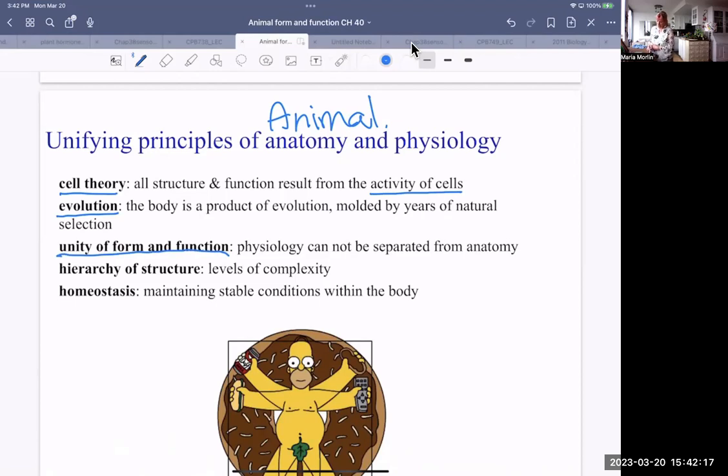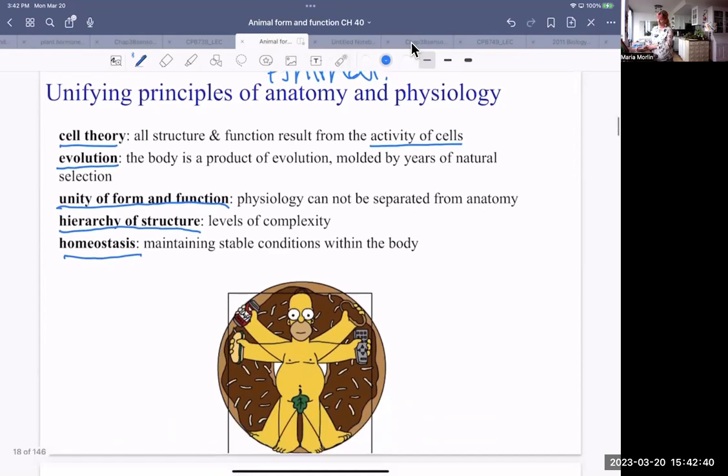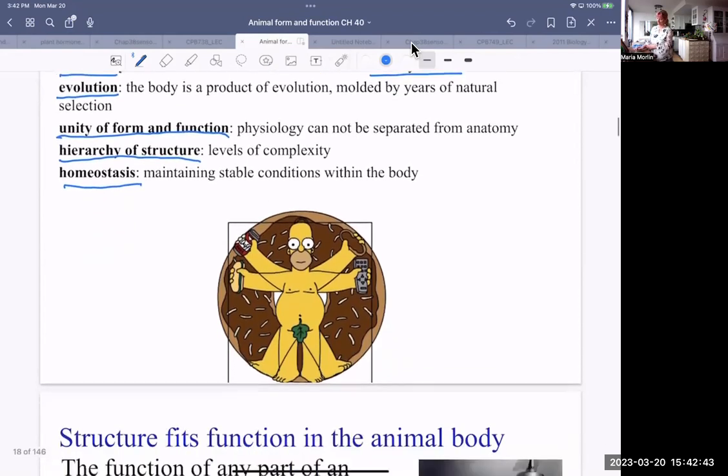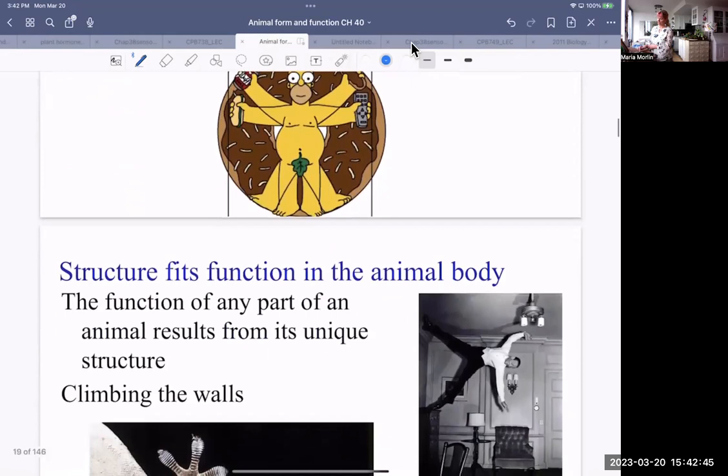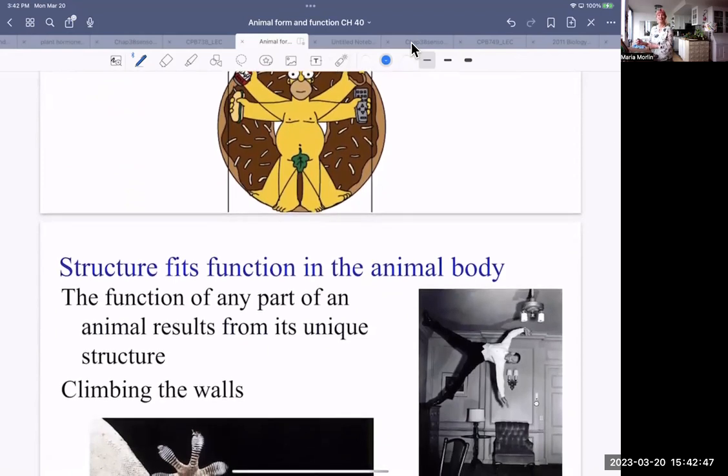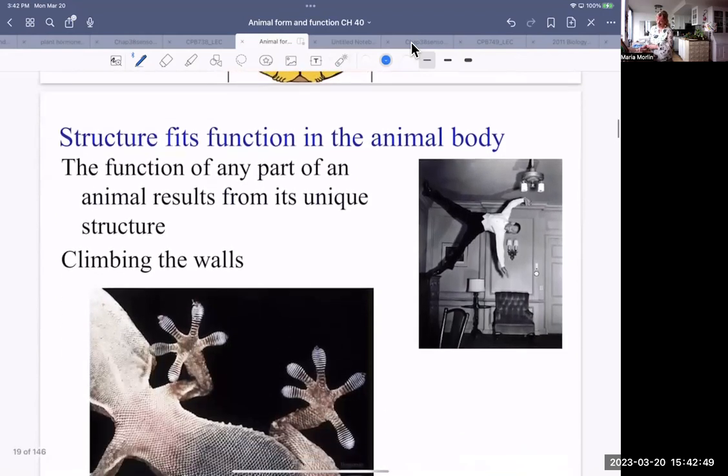There is a unity of form and function. That's just what we've been talking about. Physiology cannot be separated from anatomy. There also, with the animal form, is a hierarchy of structure. So cells are the simplest, and then the structures get more complex as they combine to form things like organs. And homeostasis is also an important unifying principle, maintaining stable conditions within the body. And that is Homer Simpson. Maintain stable conditions by drinking beer and watching television, I guess.